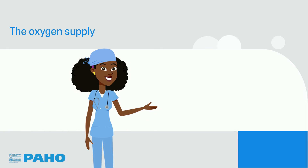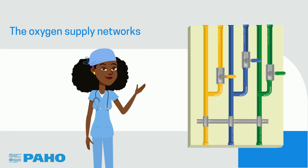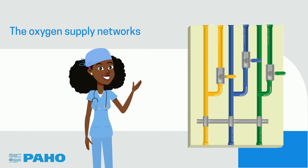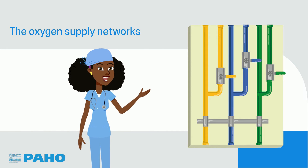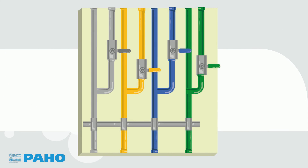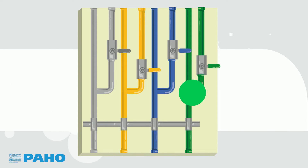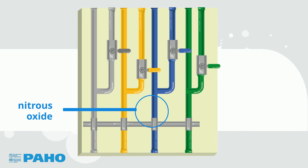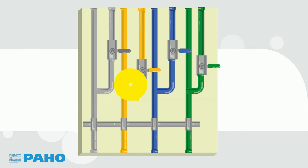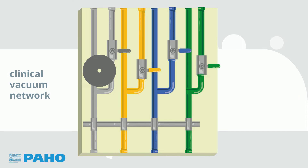The oxygen supply networks are distributed throughout the hospital and can be built into the walls or installed on them, where they are visible. For safety reasons, the networks are painted with different colors. In this video, we have used green for oxygen, blue for nitrous oxide, yellow for medical compressed air, and gray for the clinical vacuum network.